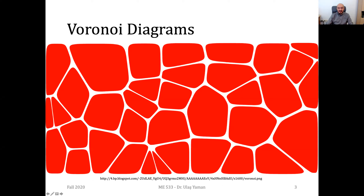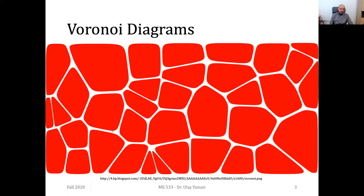Here you see an example of a Voronoi diagram. We have many cells — these highlighted ones are examples of cells. We also need generators to obtain these cells, and they are named as sites. They are not exactly at the center, but if you have a regular pattern then the sites will be exactly at the center. In this example they may not be at the center, but they are the points used to generate these Voronoi cells.